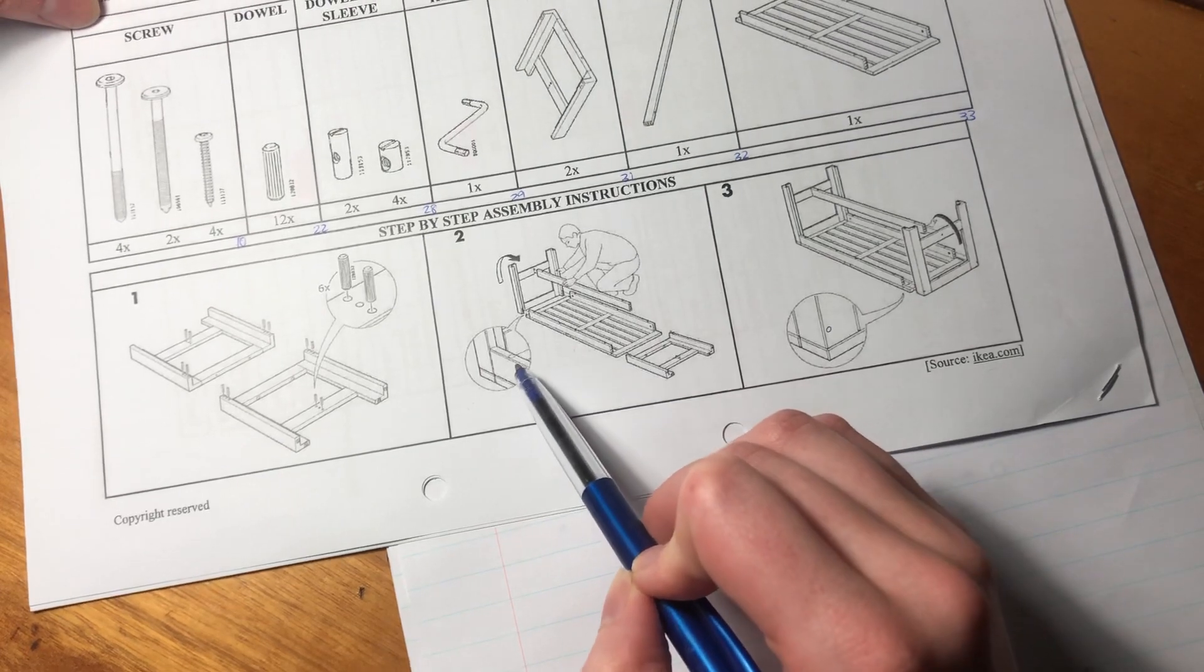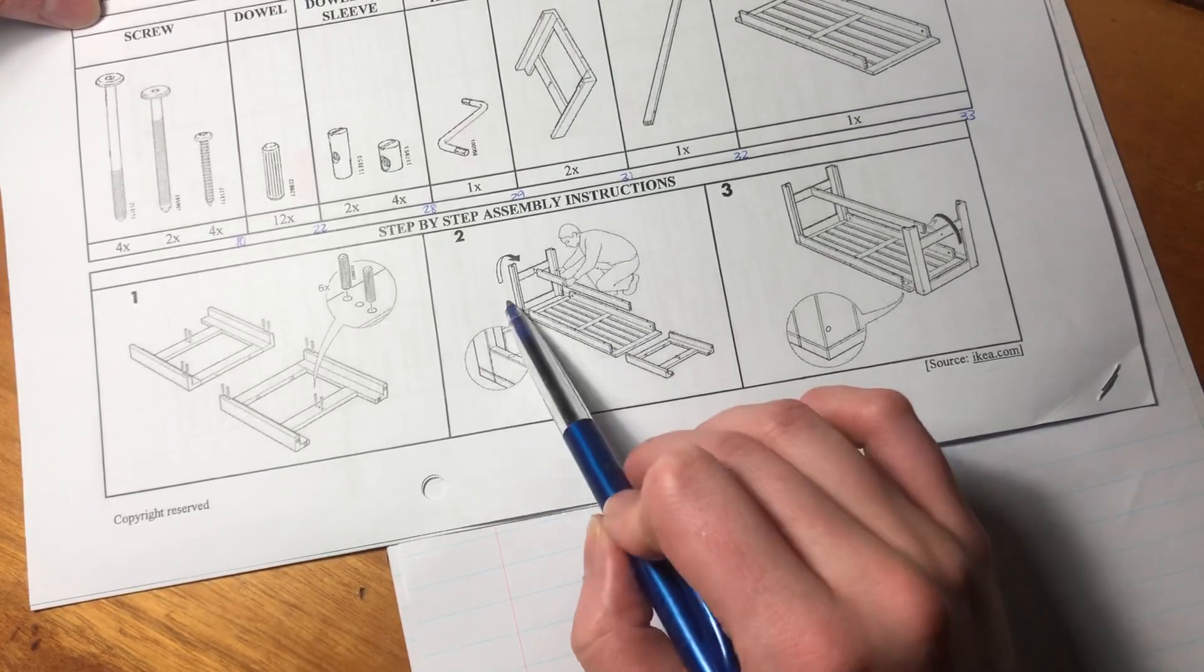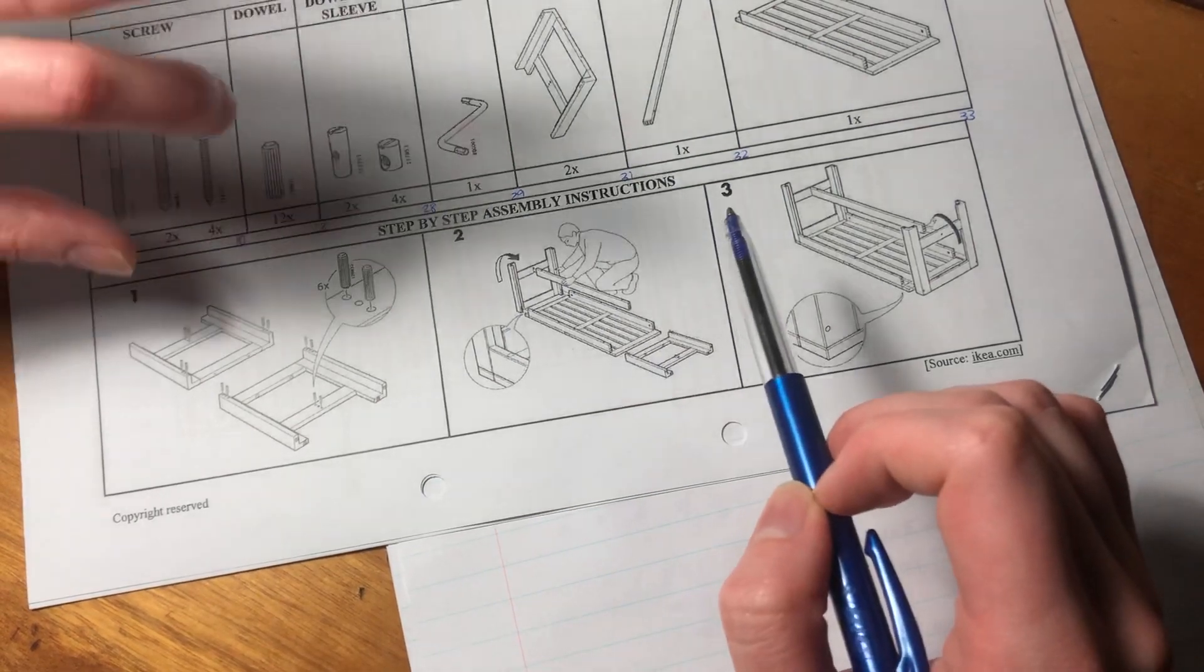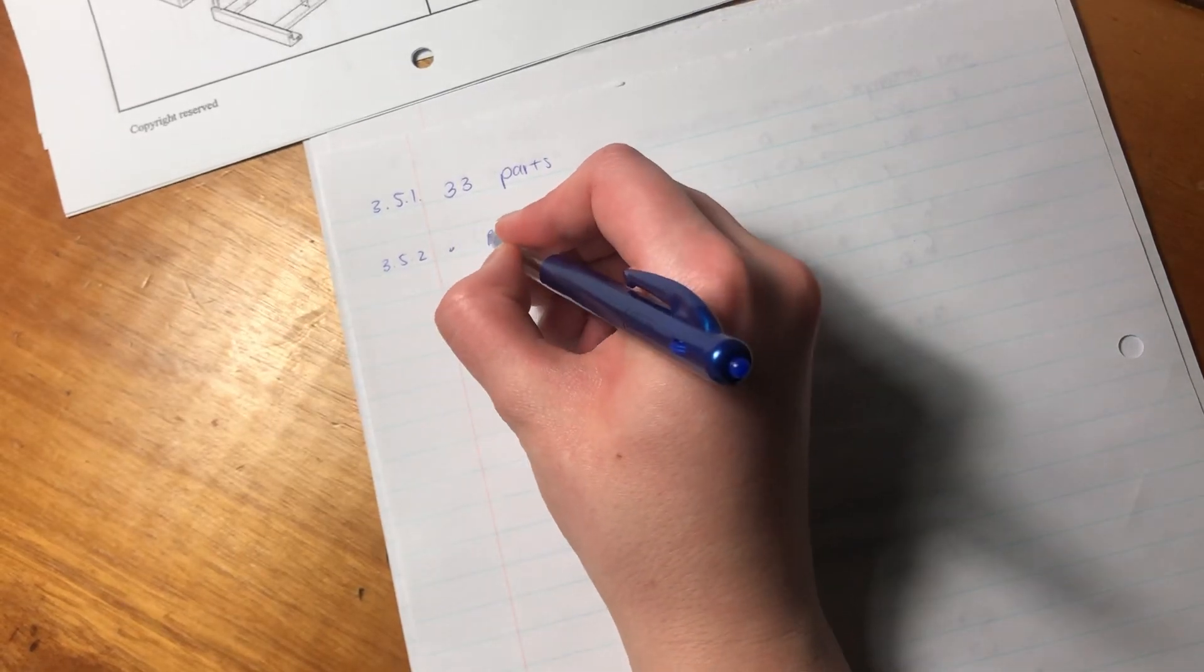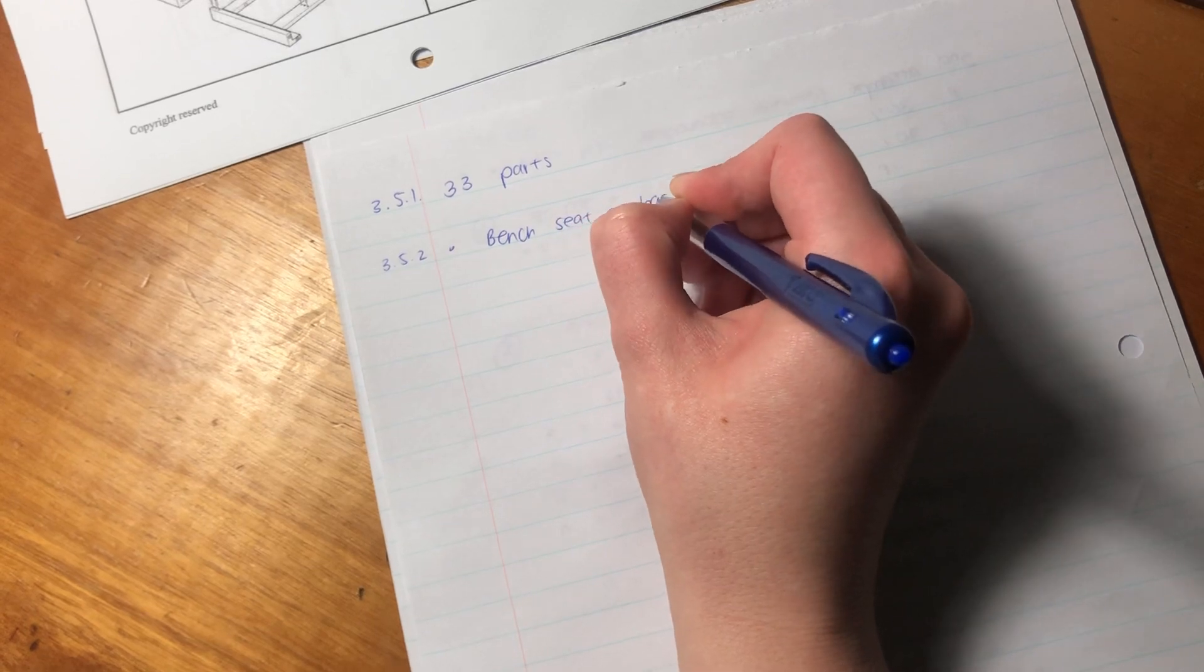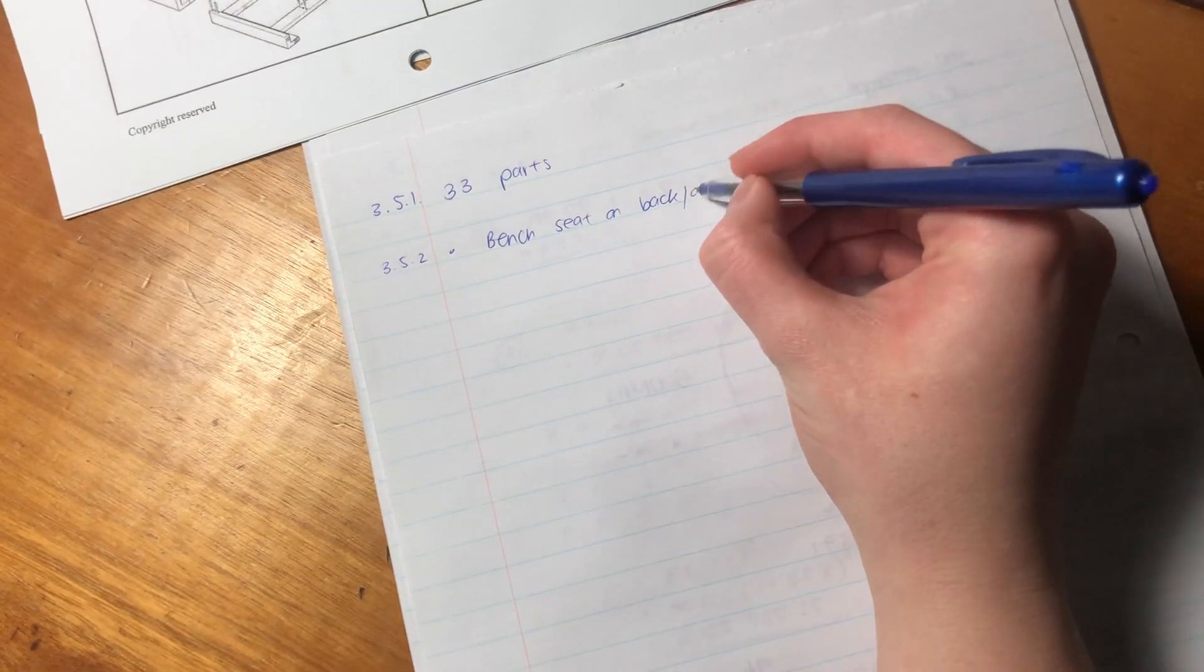Then what he's done is he's going to add the legs, and then he's going to put in the long panel between the legs. So that's three things. It only says two, but I'm going to put all three. So I'm going to say bench seat on back, or on ground.